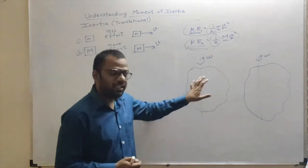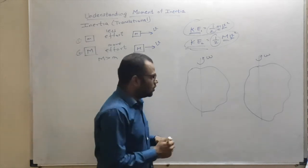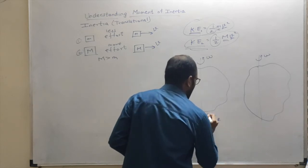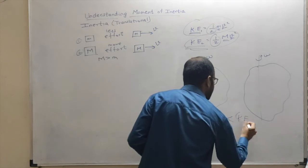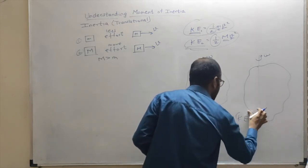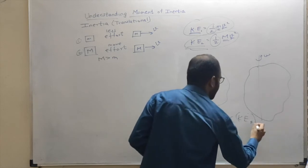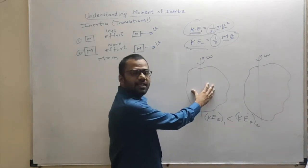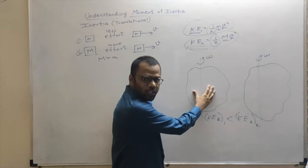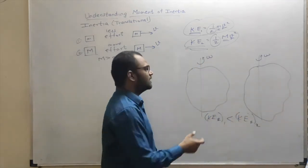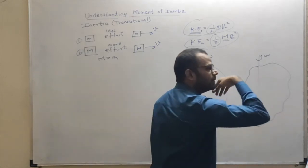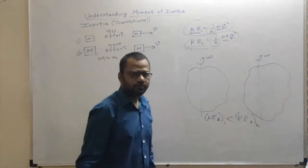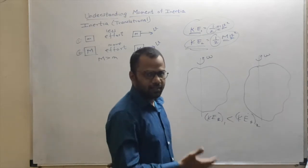Less energy spent means less energy stored in the first body; more energy spent means more energy stored in the second body. This energy is in the form of rotational kinetic energy. So the rotational kinetic energy of the first body is less than the rotational kinetic energy of the second body — because the first offered less resistance to rotation and the second offered more resistance.